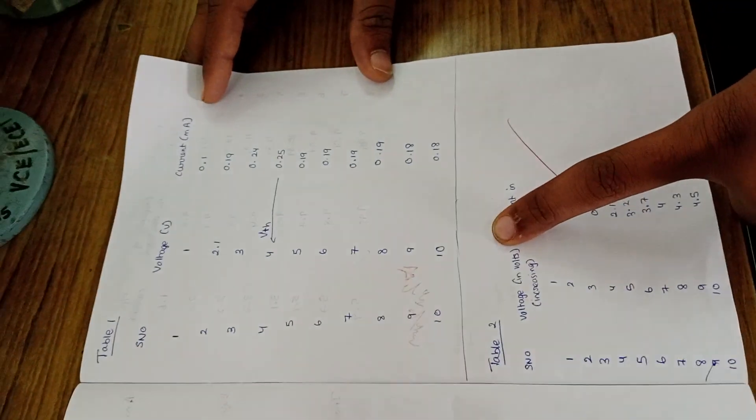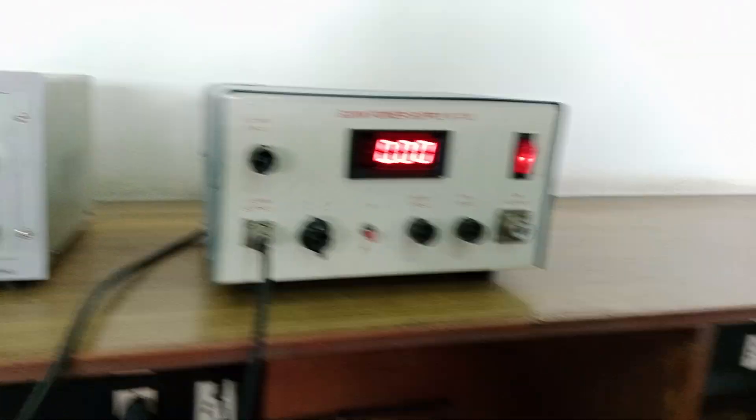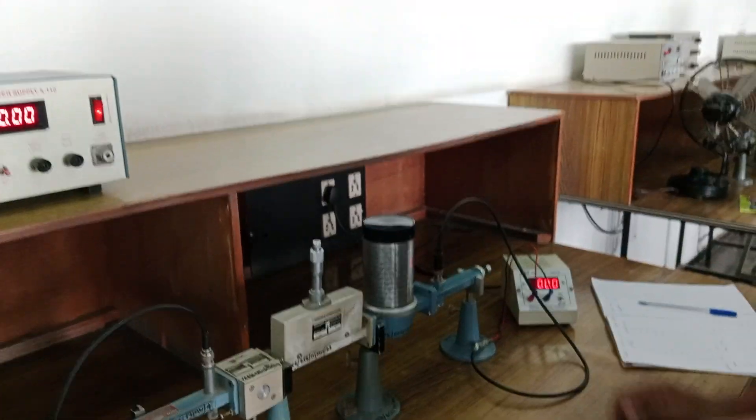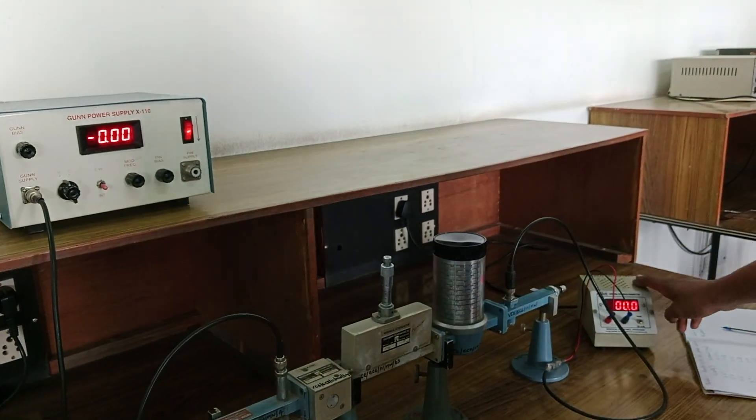Similarly we do that for a set of voltage. Then again going back to 0, we note the output current. For different values of voltage, we note the output current.